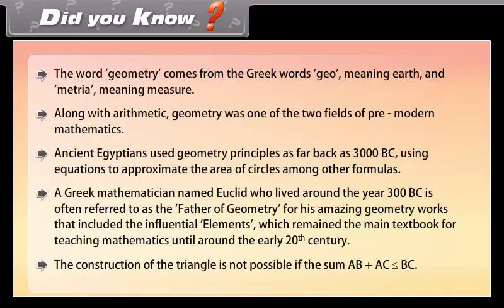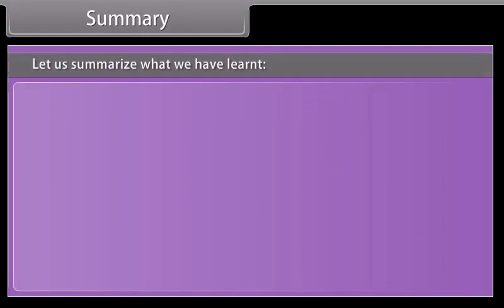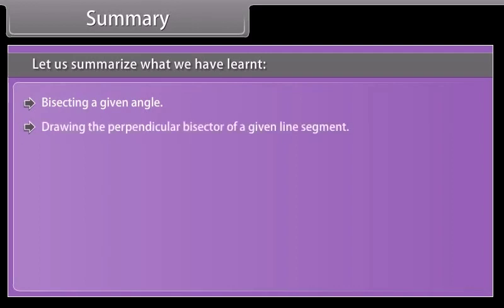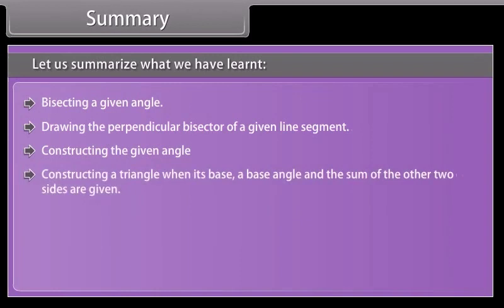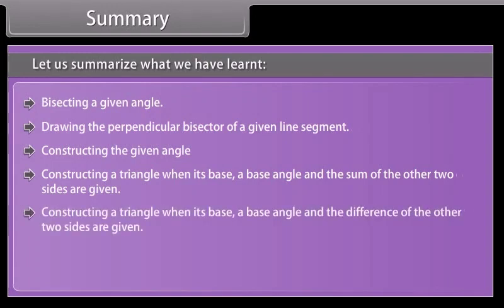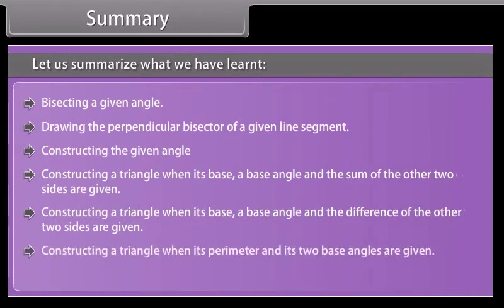The construction of a triangle is not possible if the sum AB plus AC is less than or equal to BC. Summary: Let us summarize what we have learned — bisecting a given angle, drawing the perpendicular bisector of a given line segment, constructing a given angle, constructing a triangle when its base, a base angle, and the sum of the other two sides are given, constructing a triangle when its base, a base angle, and the difference of the other two sides are given, and constructing a triangle when its two base angles and perimeter are given.